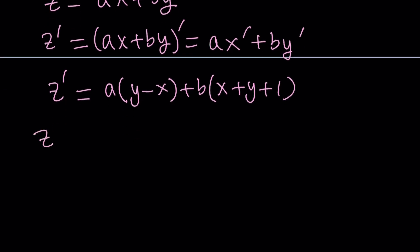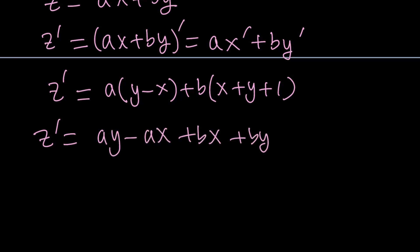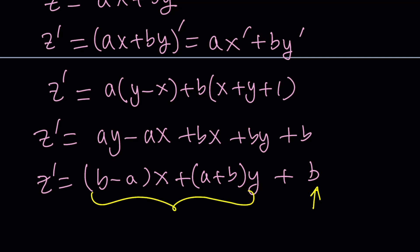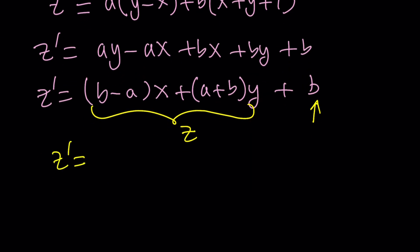Let's go ahead and distribute this. We're going to get a·y minus a·x plus b·x plus b·y plus b. Then let's put the x's together and the y's together. So we have b·x minus a·x — factor out x — and then a plus b times y, and the constant. I want this to be my constant and this to be z, so that z prime can be written as a multiple of z. So z prime can be written as kz plus b. If I can do that, this will be very easy to solve. From two variables, we're going to switch to a single variable, which we can solve easily.